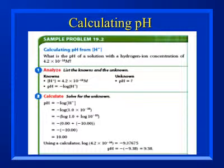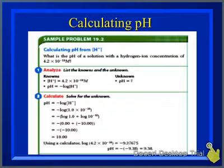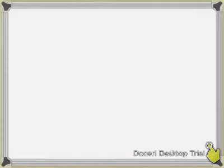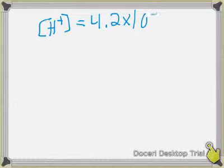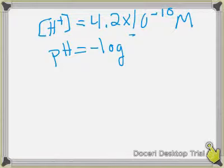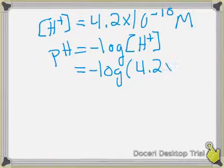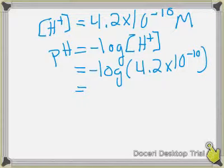Example problem: What is the pH of a solution with a hydrogen ion concentration of 4.2×10⁻¹⁰? pH = -log[H⁺], so we plug in: pH = -log(4.2×10⁻¹⁰). In the calculator, enter 4.2, hit the exponent button, enter negative 10, then log, then negative. This gives an answer of 9.4.